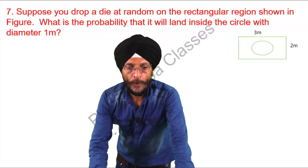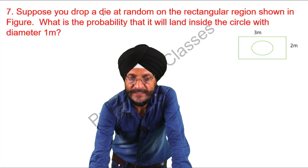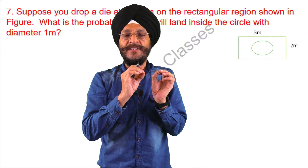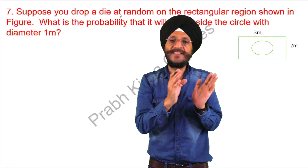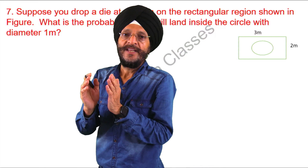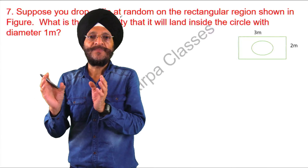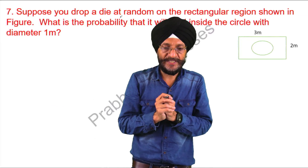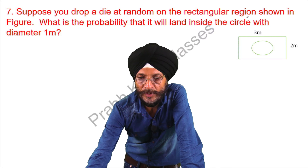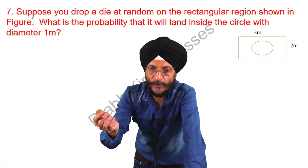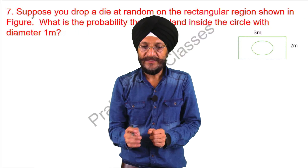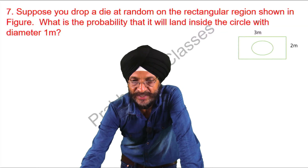Suppose you drop a die at random on the rectangular region shown in the figure. Die and dice refer to the same object — die is singular whereas dice is plural. What is the probability that it will land inside the circle, which has a diameter of 1 meter?